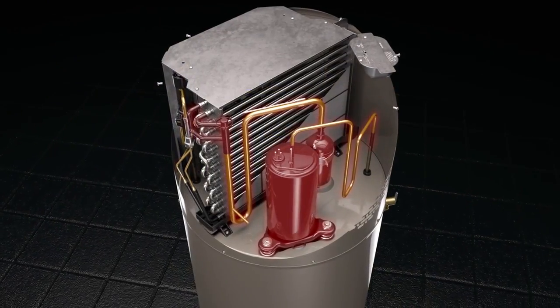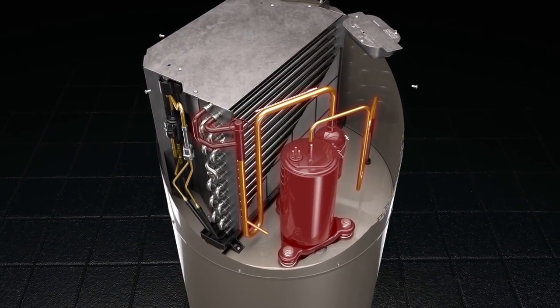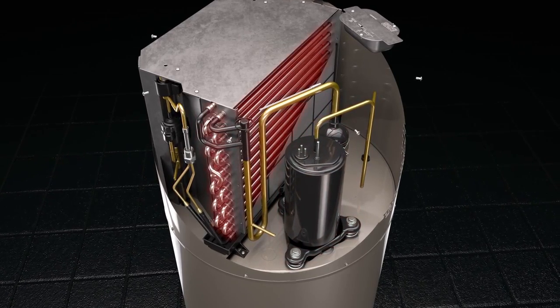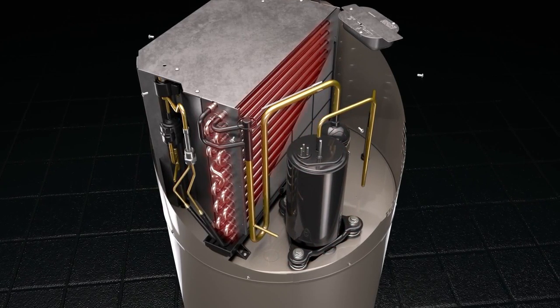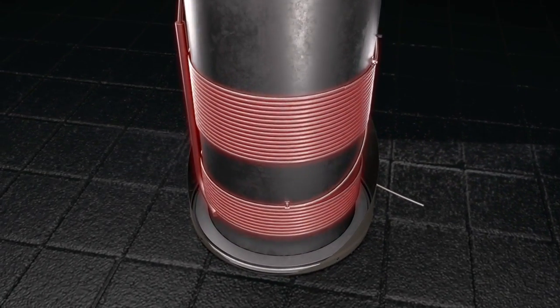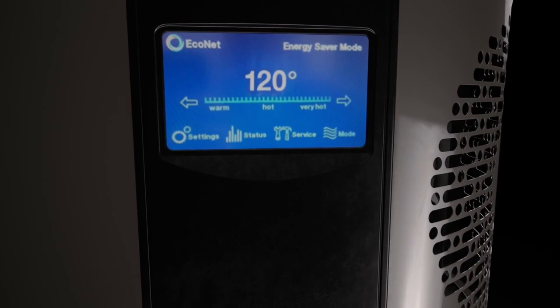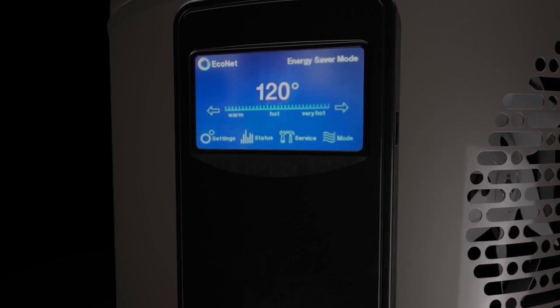Refrigerant is pumped by a compressor through the refrigerant system. The compressor increases the temperature of the refrigerant, which is delivered to the condenser. The condenser tubing is wrapped around the water heater tank, where heat is transferred from the refrigerant to the water. All functions are controlled simultaneously by an advanced control.